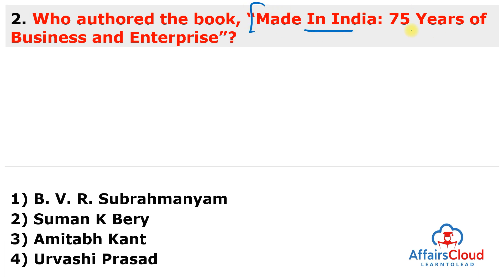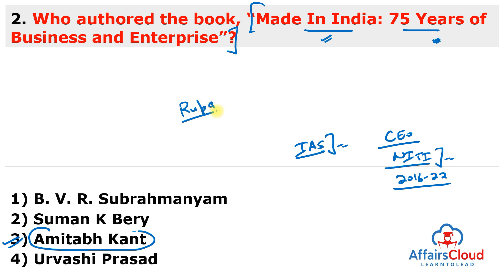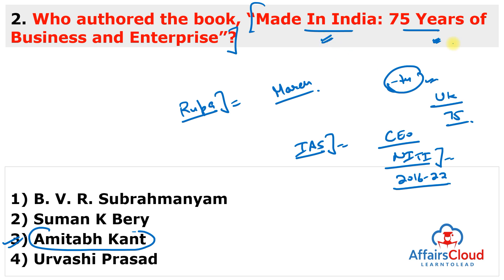Next question: Who authored the book 'Made in India: 75 Years of Business and Enterprise'? This book was authored by Amitabh Kant, a retired IAS officer who served as CEO of NITI Aayog from 2016 to 2022. It was published by Rupa Publications India and released in March 2023. The book coincides with India reaching a significant milestone by becoming the fifth largest economy in the world, surpassing the United Kingdom after 75 years of independence.